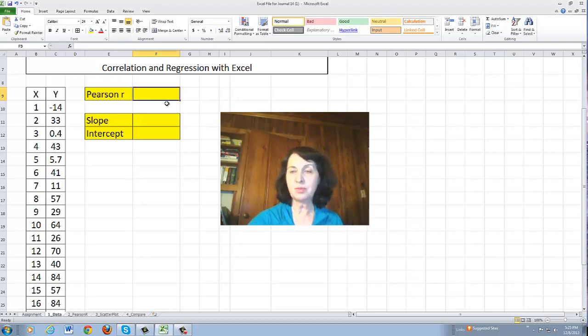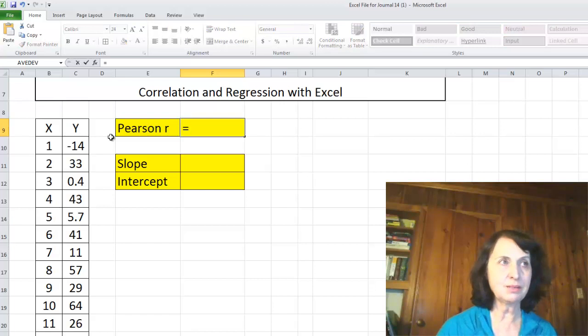When you want to test a hypothesis or decide whether two variables X and Y are correlated in some way, we need Pearson R.